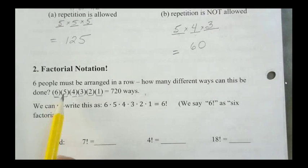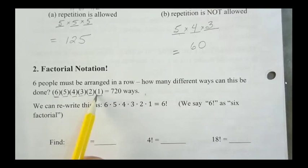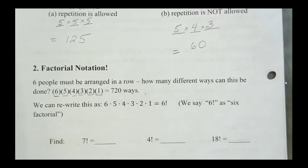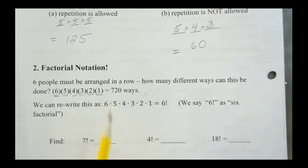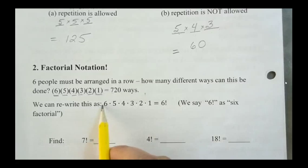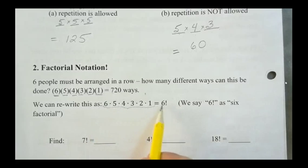There's six that can fit in here, five left, four left, three left, two left, and one left for that last spot. So we multiply all those numbers together, right? And we get 720. Now, with factorial notation, you can very quickly write all of this out with a six and an exclamation mark.